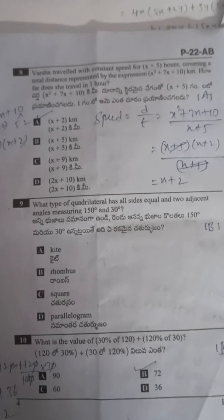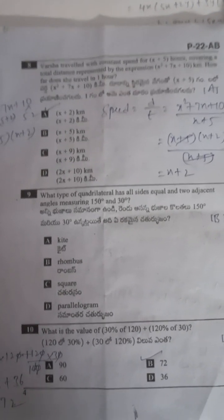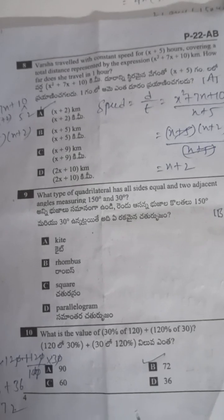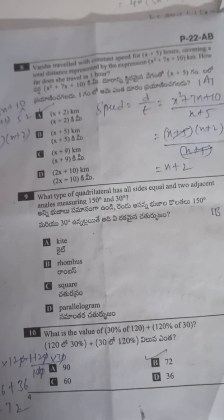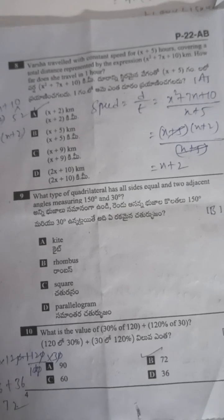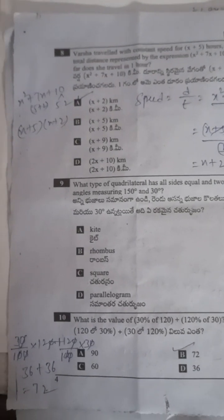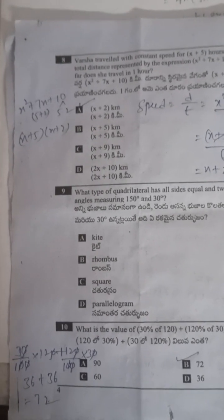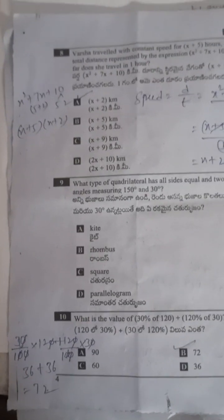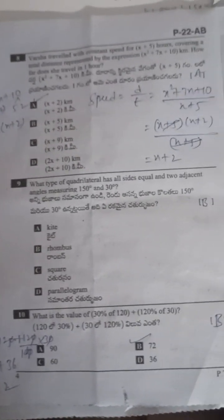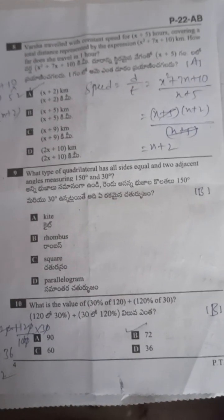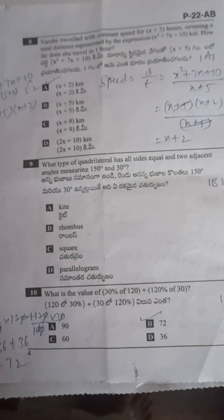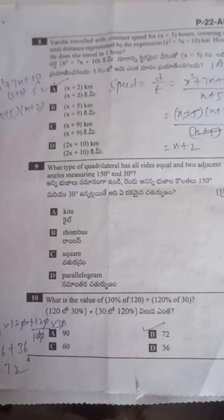Speed equals distance by time, so speed equals (x squared + 7x + 10) divided by (x + 5). Factoring x squared + 7x + 10: we need factors of 10 that add to 7, which are 5 and 2. So x squared + 7x + 10 equals (x+5)(x+2). Therefore speed equals (x+5)(x+2) divided by (x+5), and (x+5) cancels, giving x plus 2.